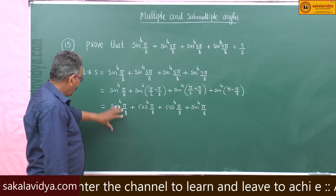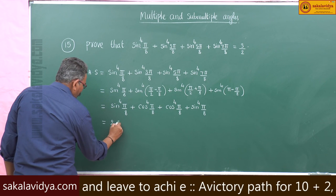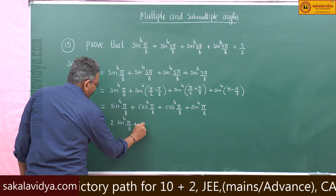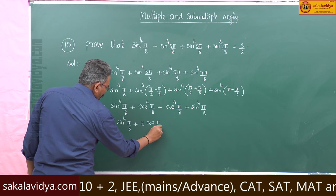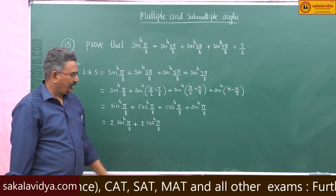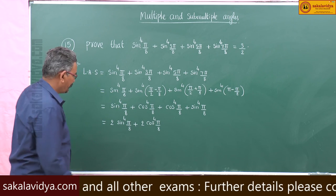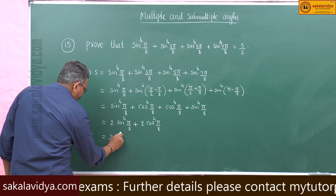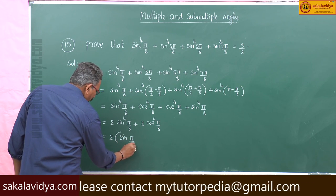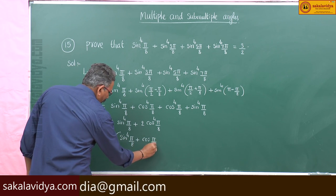Adding the like terms, we get 2·sin⁴(π/8) + 2·cos⁴(π/8). Taking 2 as common, this becomes 2·[sin⁴(π/8) + cos⁴(π/8)].